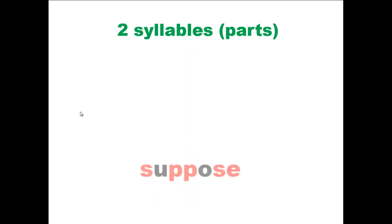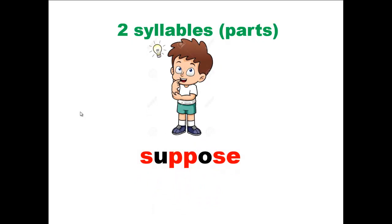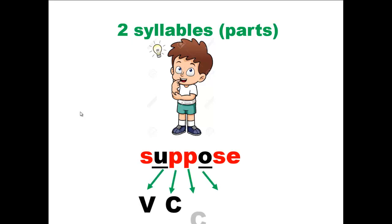The next word: suppose, meaning to think or to guess. Here are the two vowel sounds. Let's check the order or pattern of the vowel and consonant sounds, starting with the first vowel sound: vowel, another consonant, another consonant, and a vowel sound. So this word should be divided between the consonants in the middle.